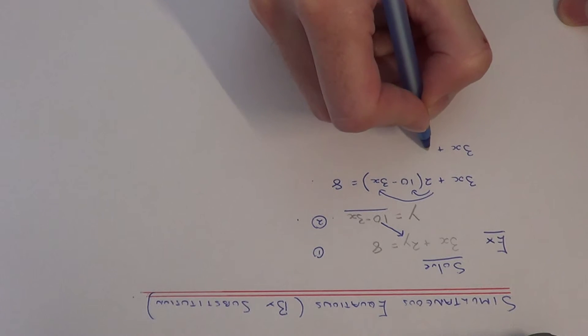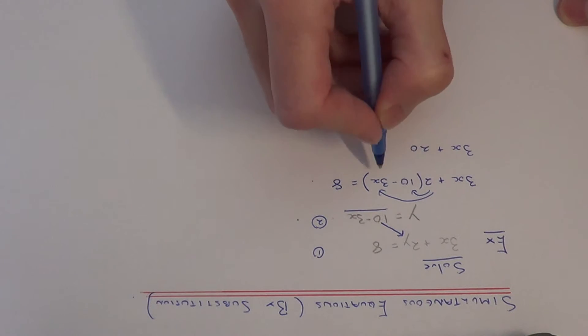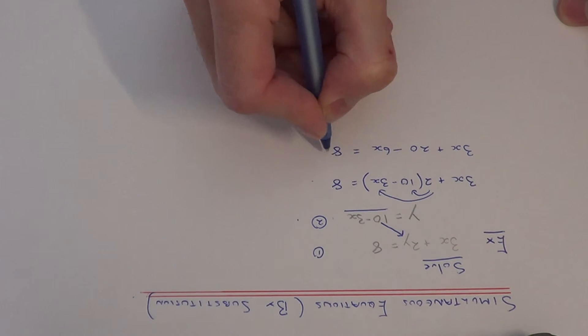So 2 times 10 is 20, 2 times minus 3x is minus 6x, and that's equal to 8.